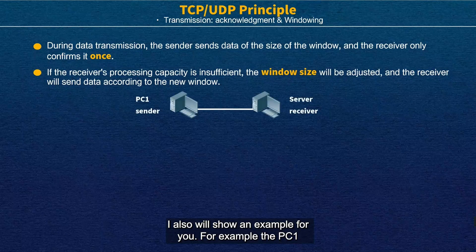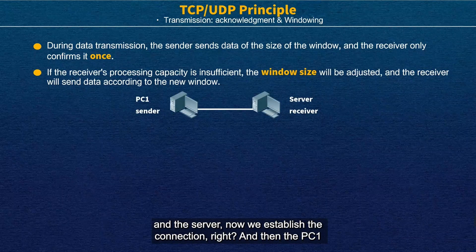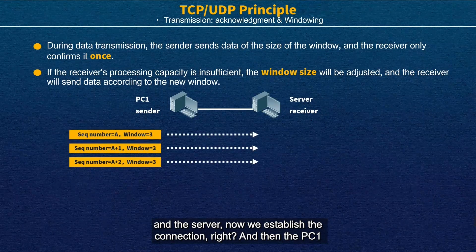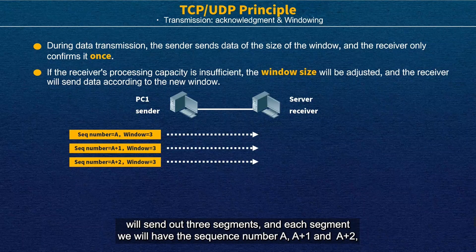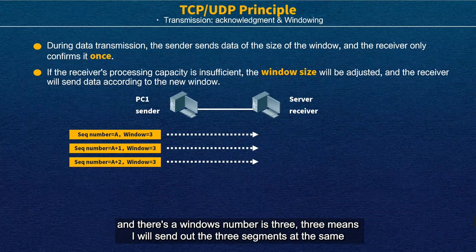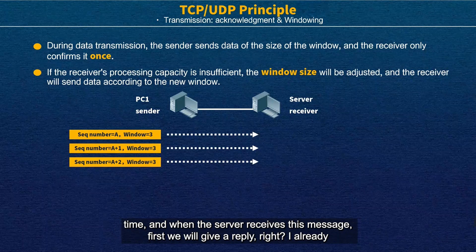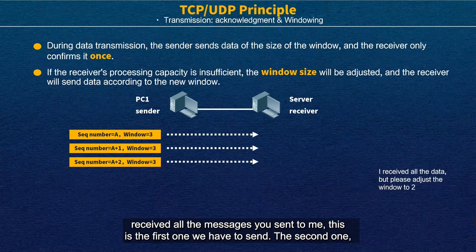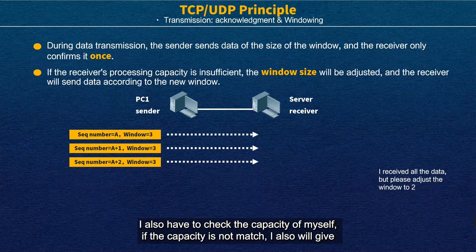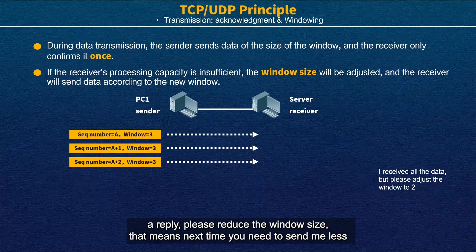For example, with PC1 and the server: after we establish the connection, PC1 will send out three segments. Each segment has sequence numbers A, A+1, A+2, and the window number is 3, meaning it sends 3 segments at the same time. When the server receives these messages, it will first reply that it received all messages. Then it checks its own capacity — if capacity is insufficient, it will reply asking to reduce the window size, so next time the sender sends fewer messages.